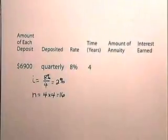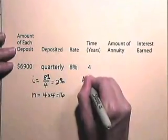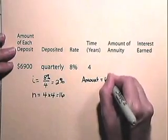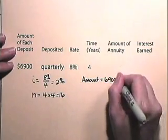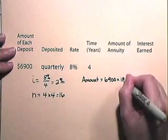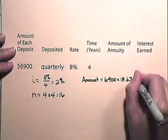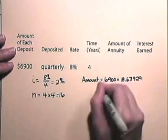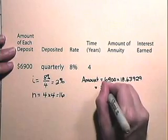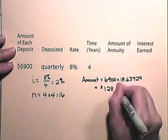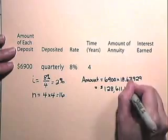So the amount of our annuity will be $6,900 multiplied times 18.63929, which is $128,611.10.